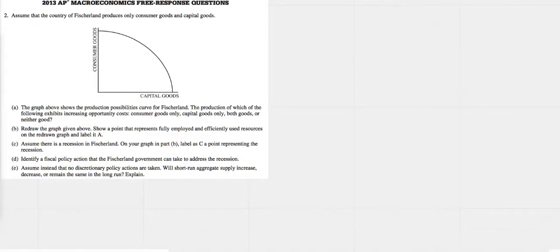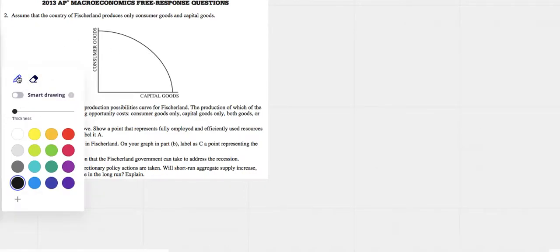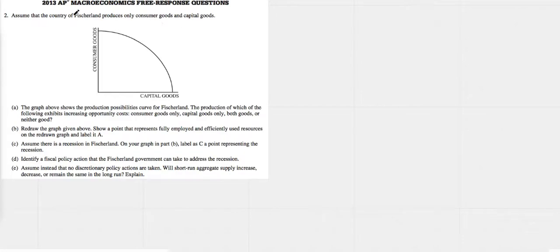2013 AP Macro, FRQ number two. Fisherland produces only consumer and capital goods. The graph above shows the PPC for Fisherland. The production of which of the following exhibits increasing opportunity cost: consumer goods only, capital goods only, both goods, or neither good?